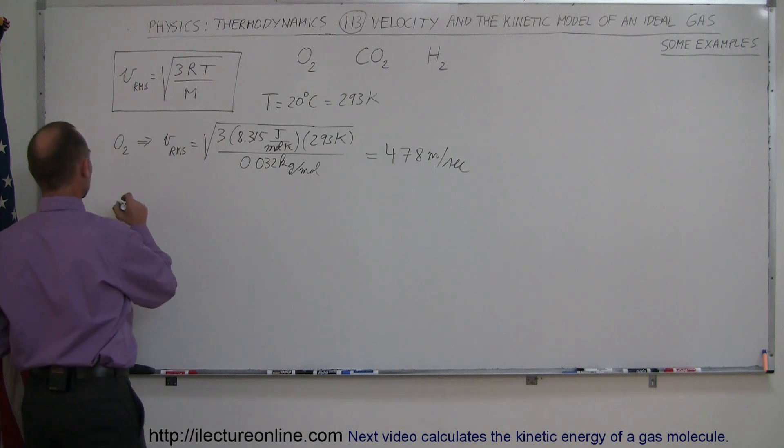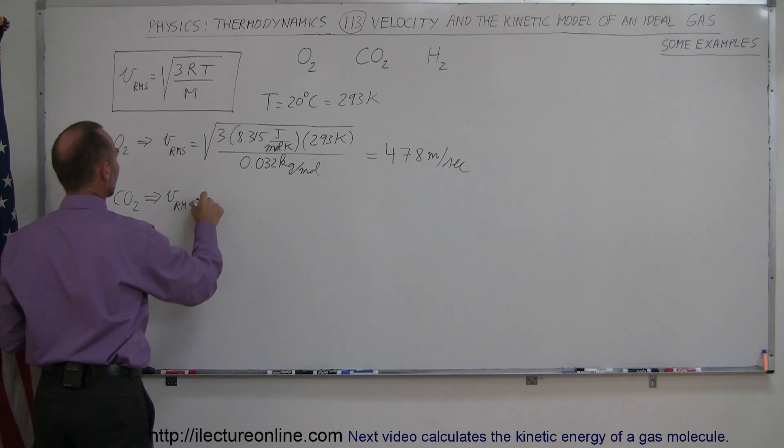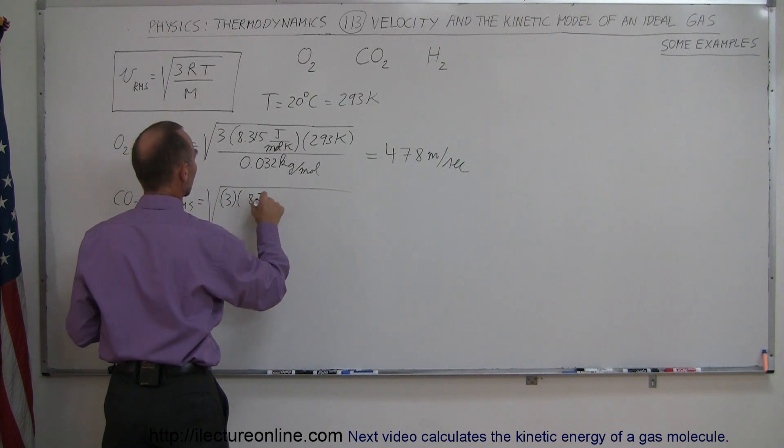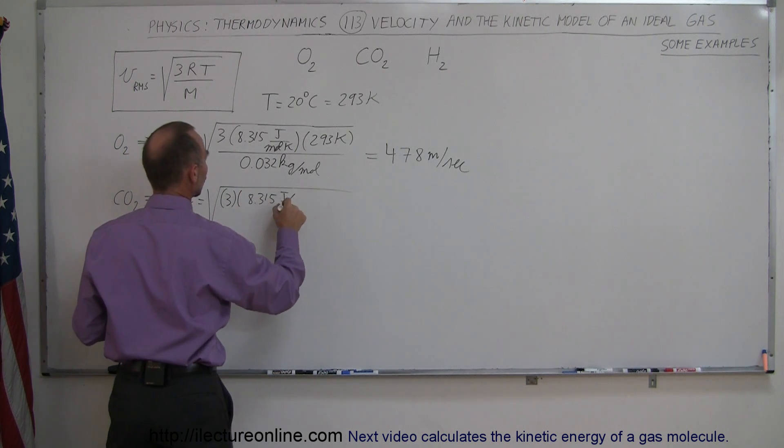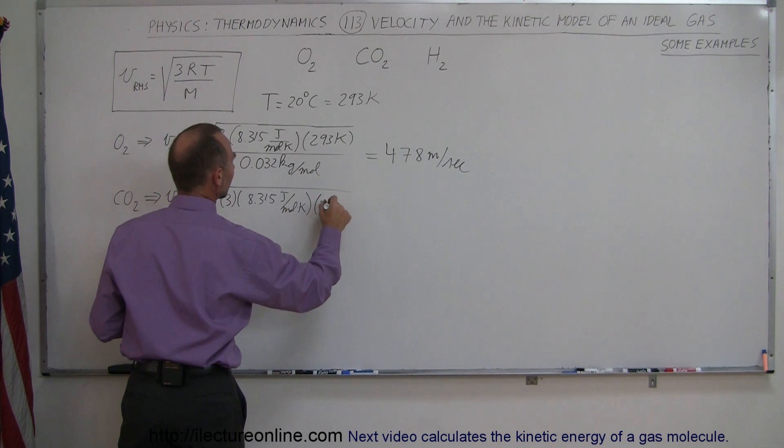All right, let's see what it would be for carbon dioxide. CO2 vRMS is equal to, everything else would be the same, so it would be 3 times 8.315 joules per mole times Kelvin times 293 Kelvin, assuming the same temperature.